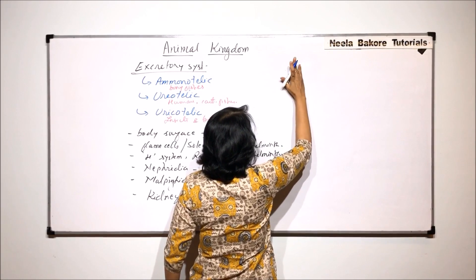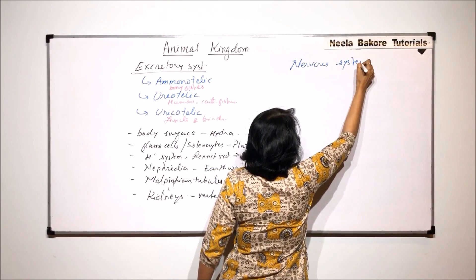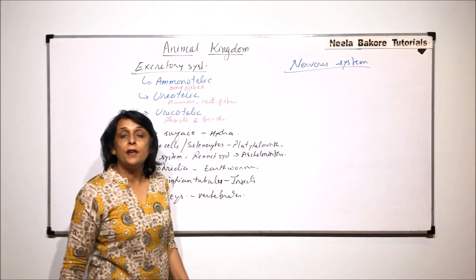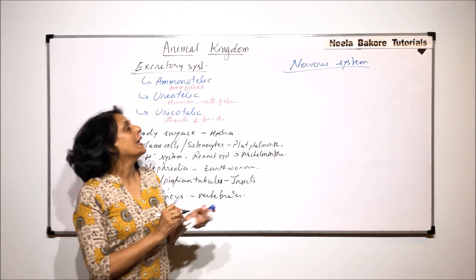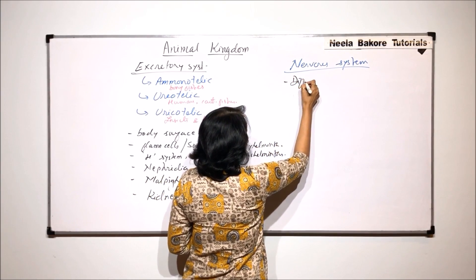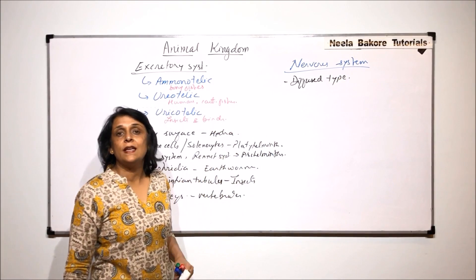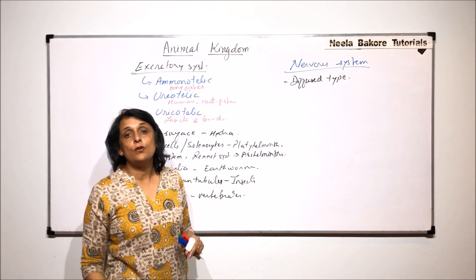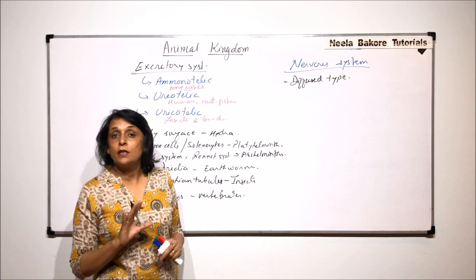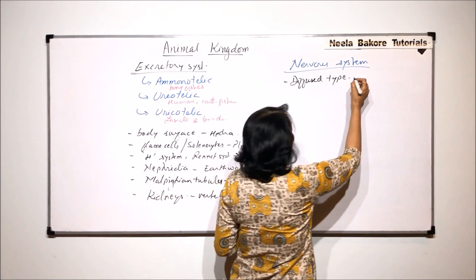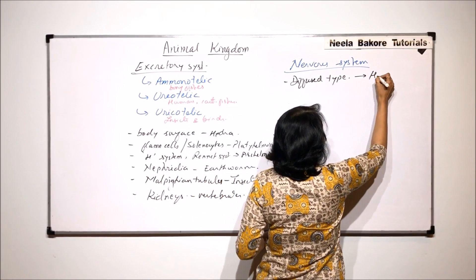Now let us talk about the nervous system, which is responsible for coordination. Starting with simpler organisms, they have a diffuse type of nervous system — scattered cells that help in conduction of impulses or stimuli, but not organized into a proper system. This is seen in coelenterates, for example Hydra.